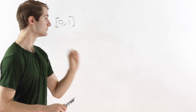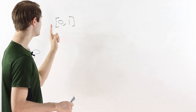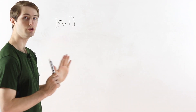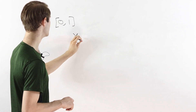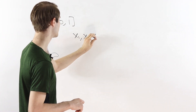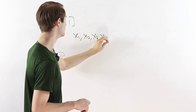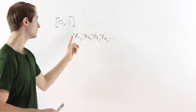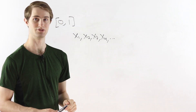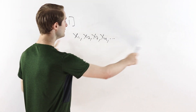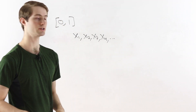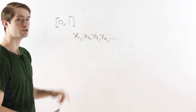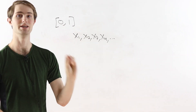We are going to prove that the set of real numbers between 0 and 1 is uncountable. In other words, there is no way to write a list of numbers x1, x2, x3, x4, and so on such that every number between 0 and 1 shows up somewhere in this list. No matter how we set up this infinitely long list, there will always be a number between 0 and 1 that's not in the list.